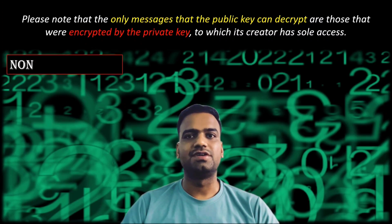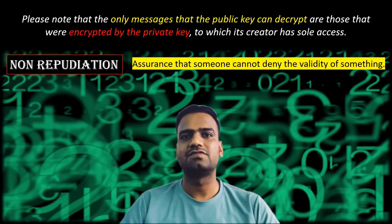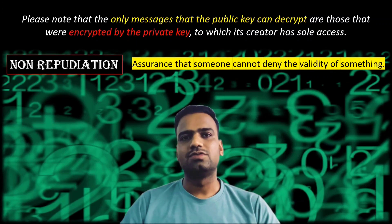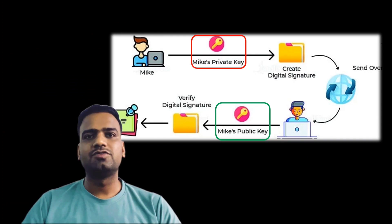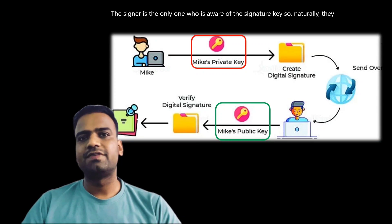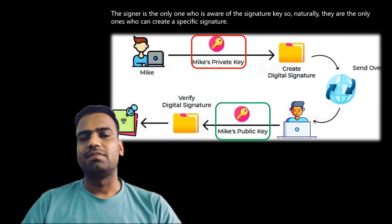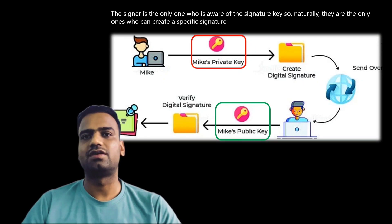Only messages encrypted by the private key can be decrypted by the public key — and this is used to achieve non-repudiation. Non-repudiation is the assurance that someone cannot deny the validity of something. For example, if you sign a contract using your digital signature, that signature is created using your private key. Anyone can verify your digital signature using your public key, but only you can create it using your private key, so the other party can verify whether you signed the contract.